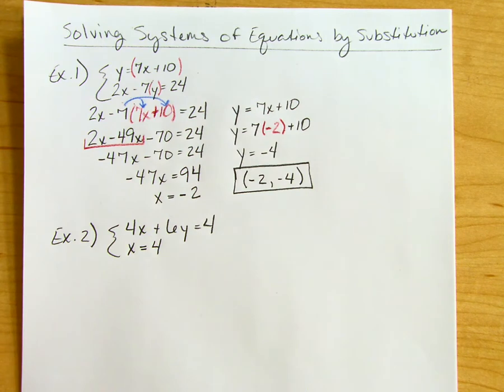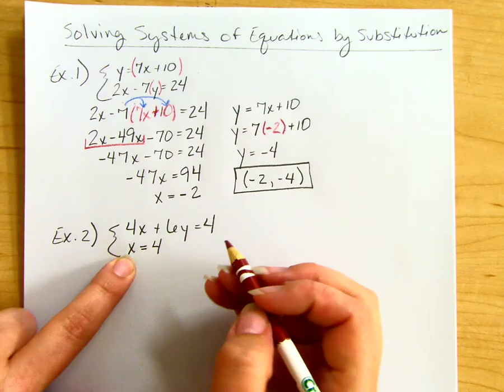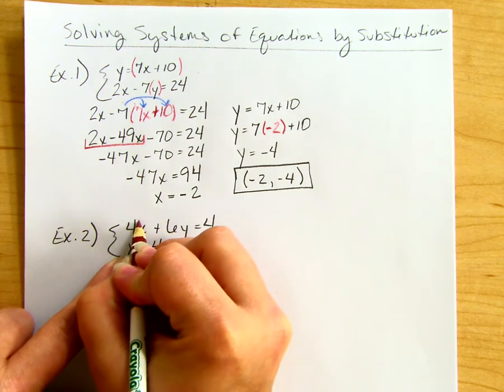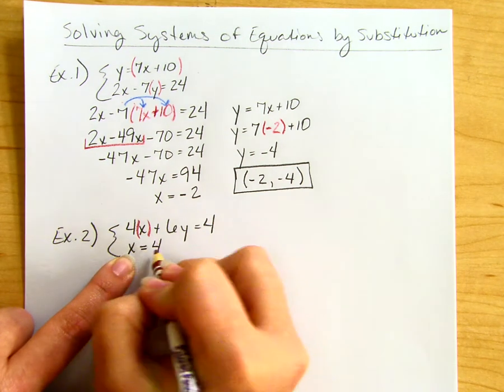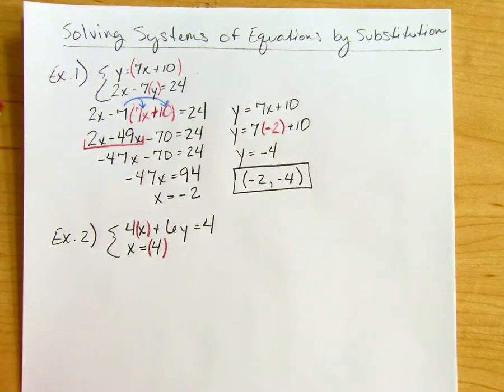In this case, the second equation is solved for x. So everywhere I see x in the first equation, I'll replace it with the value of x, which is 4.